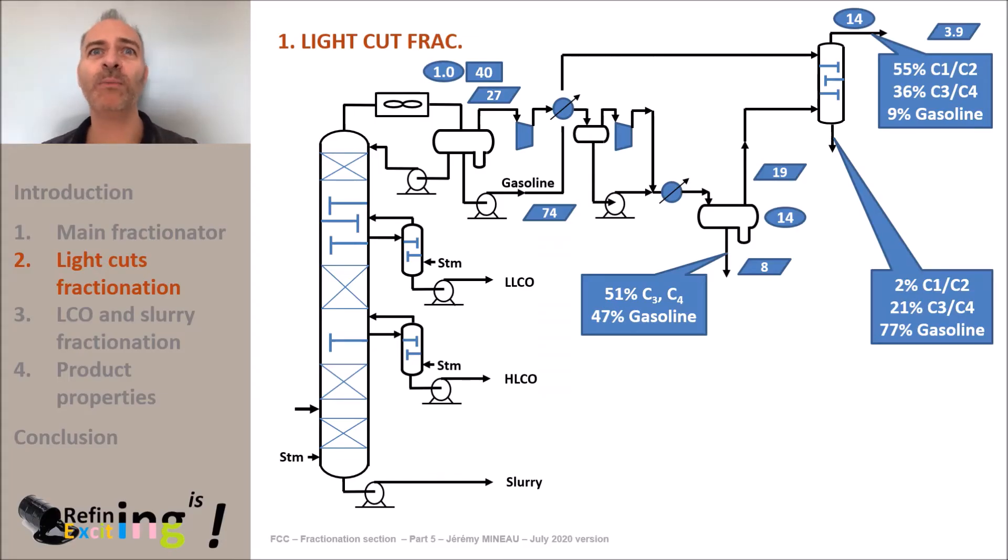However, in this C1 plus C2 rich gas stream, there is still too much gasoline and LPG molecules. Indeed, we prefer to separate the LPG molecules and especially the propylene to valorize it. We recall that the molecules routed to the refinery's fuel gas network will serve as fuel for the furnaces. They will be burnt and not valorized as such.